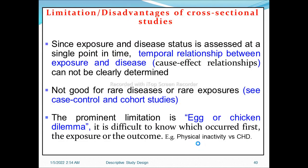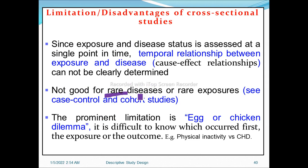Limitations of cross-sectional studies: since exposure and disease status are assessed at a single point in time, the temporal relationship between exposure and disease cannot be determined — meaning cause-and-effect relationship cannot be clearly established. Temporal relationship means we cannot determine whether exposure came before disease or vice versa. Cross-sectional studies are also not good for rare diseases or rare exposures.